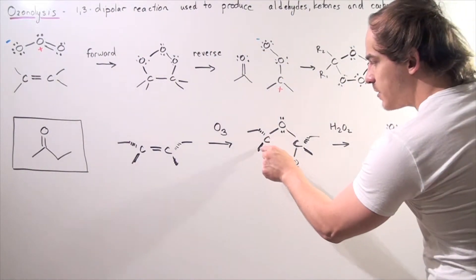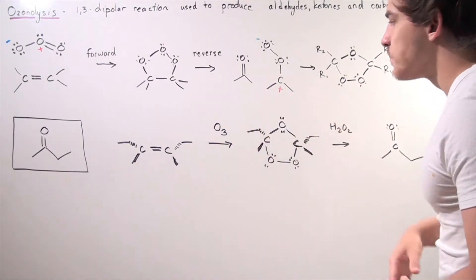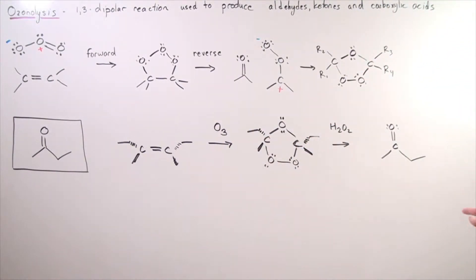Notice we have the methyl group and the ethyl group, the methyl group and the ethyl group. Finally, if we add hydrogen peroxide or H2O2, we get the following molecule.